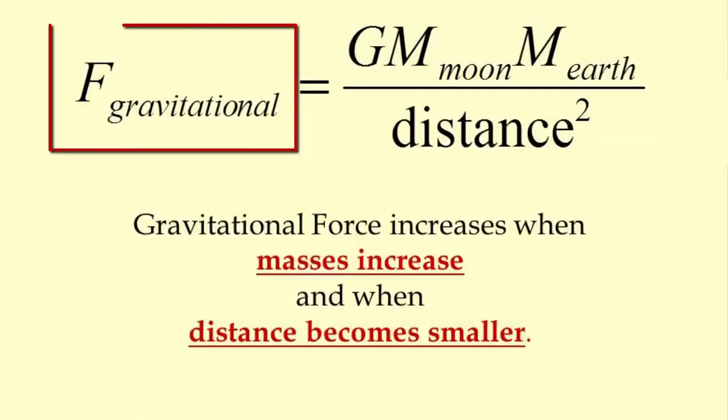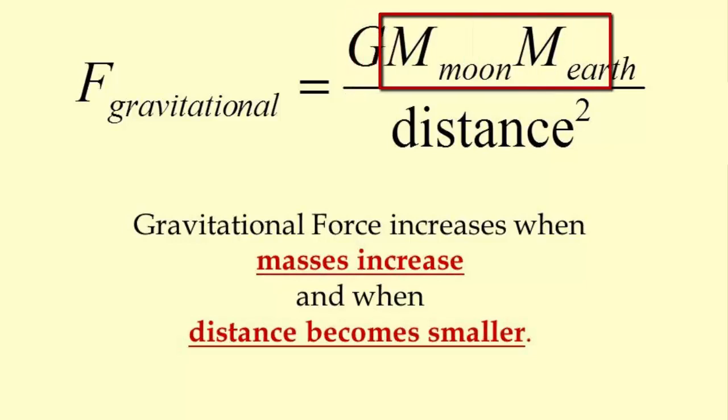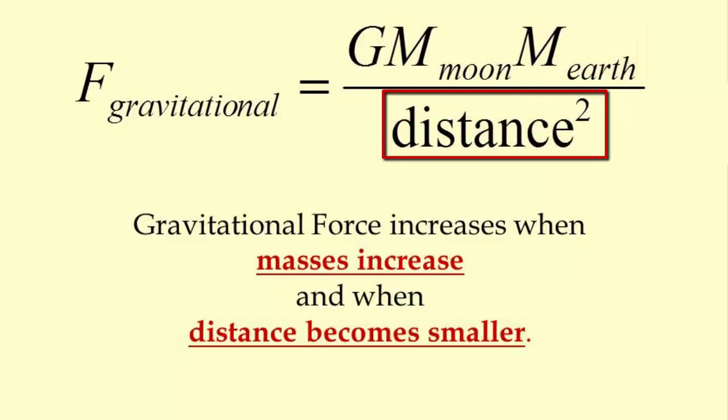Why? The gravitational force experienced between any two objects is equal to a very small constant number G, known as the gravitational constant, multiplied by the masses of both objects and divided by the distance between them squared. How would you make this gravitational force or fraction greater? Increase the numerator or decrease the denominator? Increase the mass of the objects or decrease the distance between the two objects?